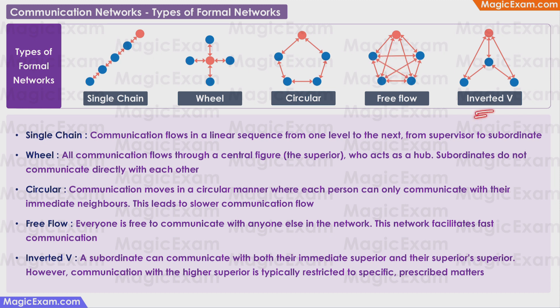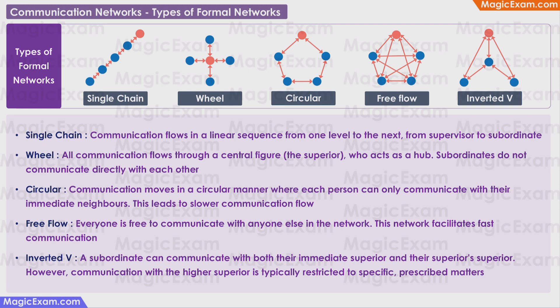In an inverted V, a subordinate can communicate with both their immediate superior and also their superior's superior. In many companies, this is also referred to as skip level communication, because the information or communication can skip one level in the organizational hierarchy. However, communication with the higher superior is typically restricted to specific prescribed matters.